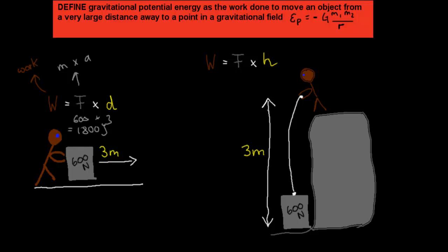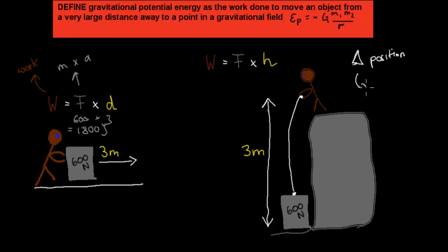We can also talk about work in a different scenario. Here, a person is changing the position — there's a change in position, that delta sign means change — of a box. In this case it's not being dragged along the floor, it's being pulled up onto a mountain. Moving a box along the floor uses kinetic energy, but pulling the box up also uses kinetic energy.